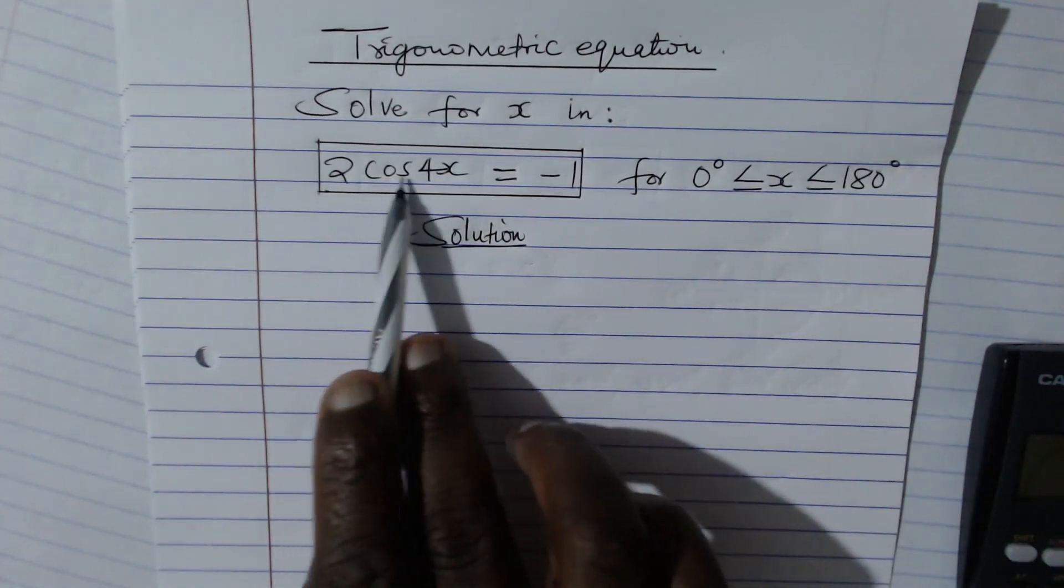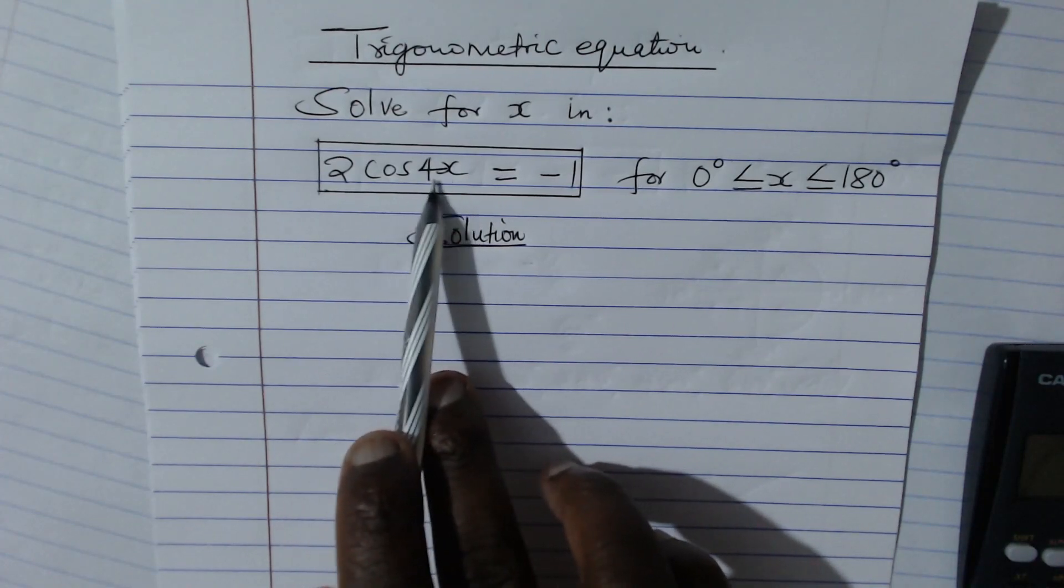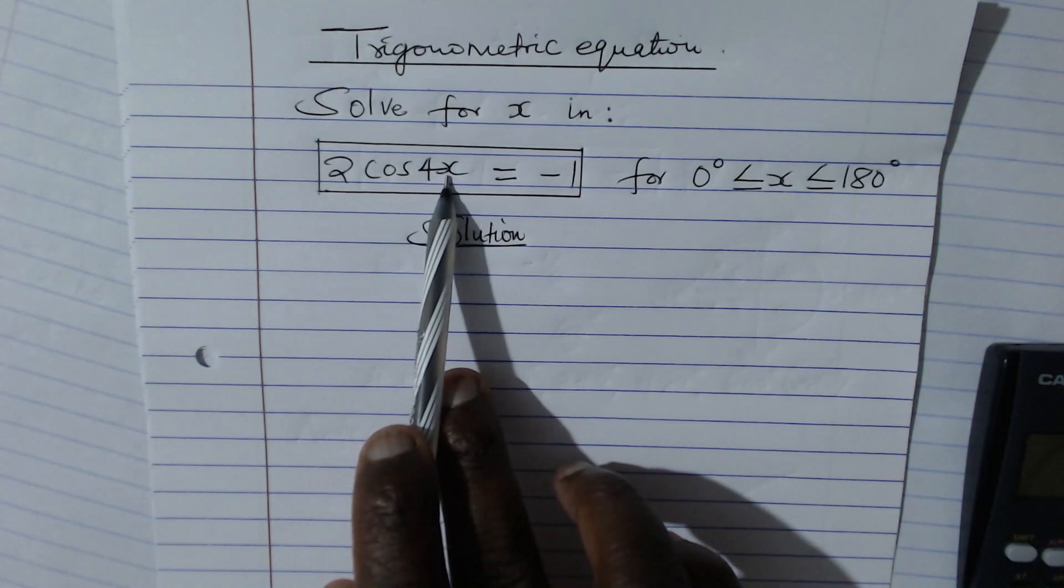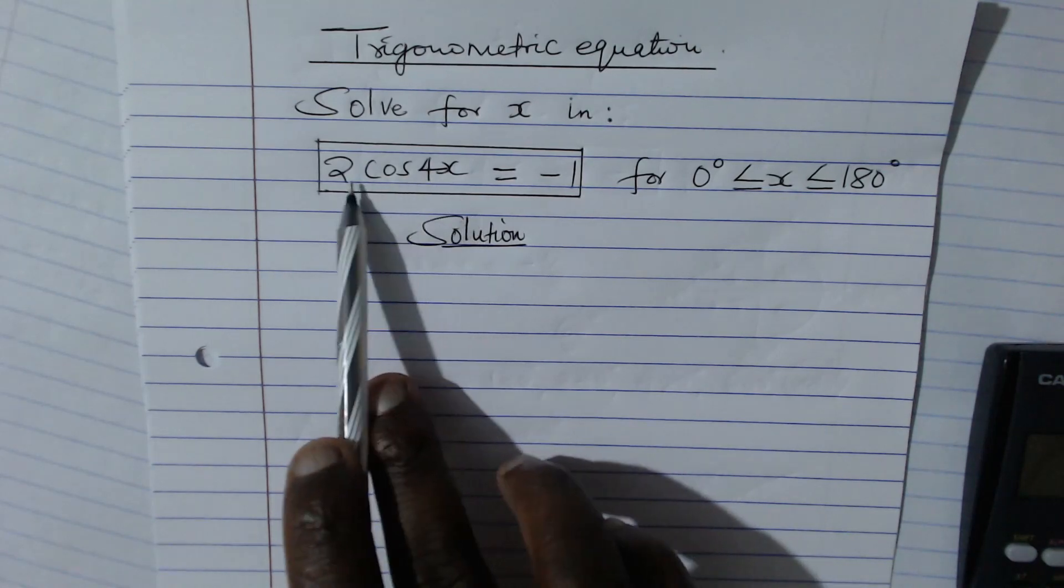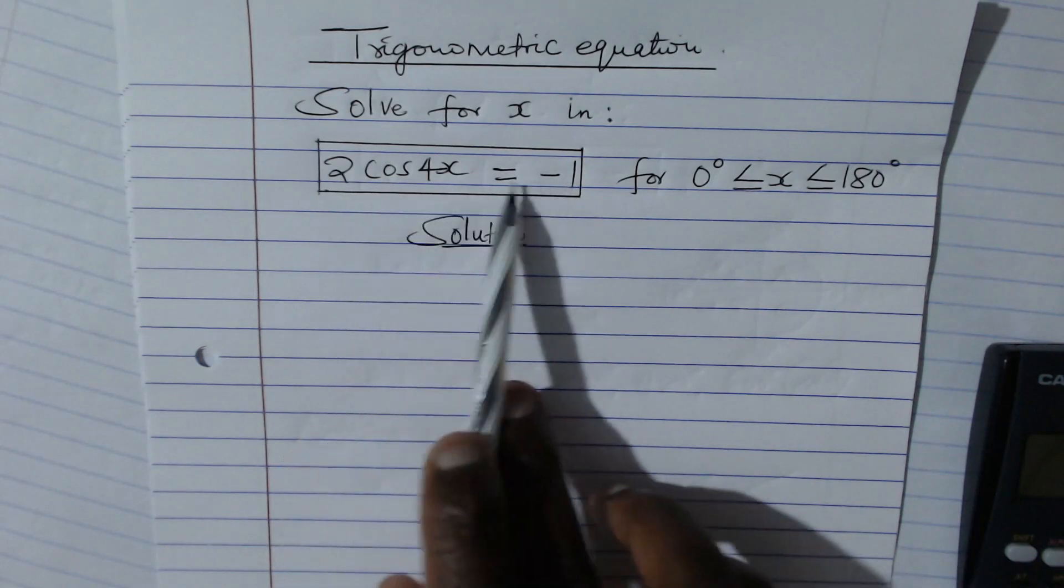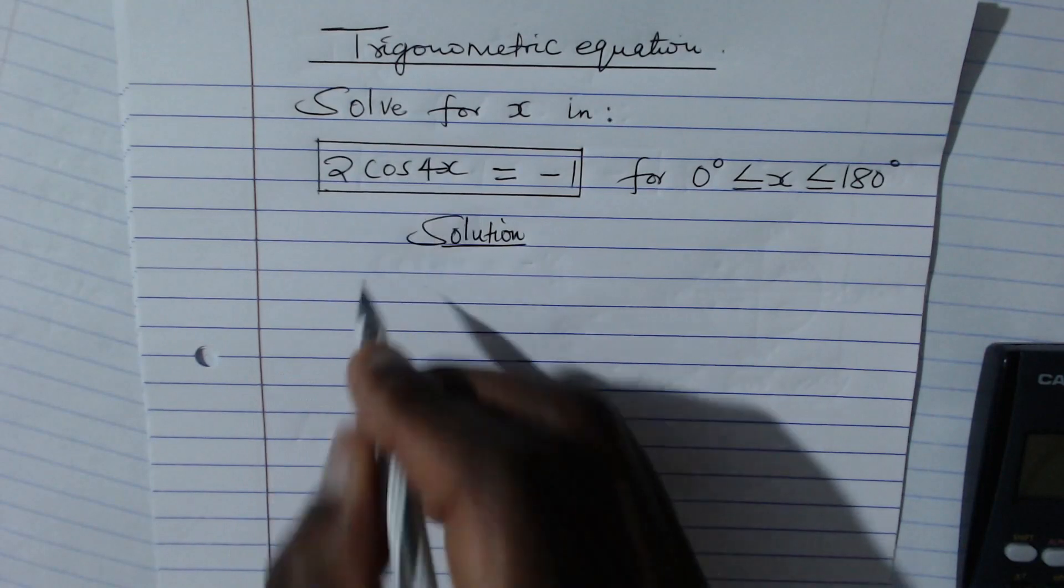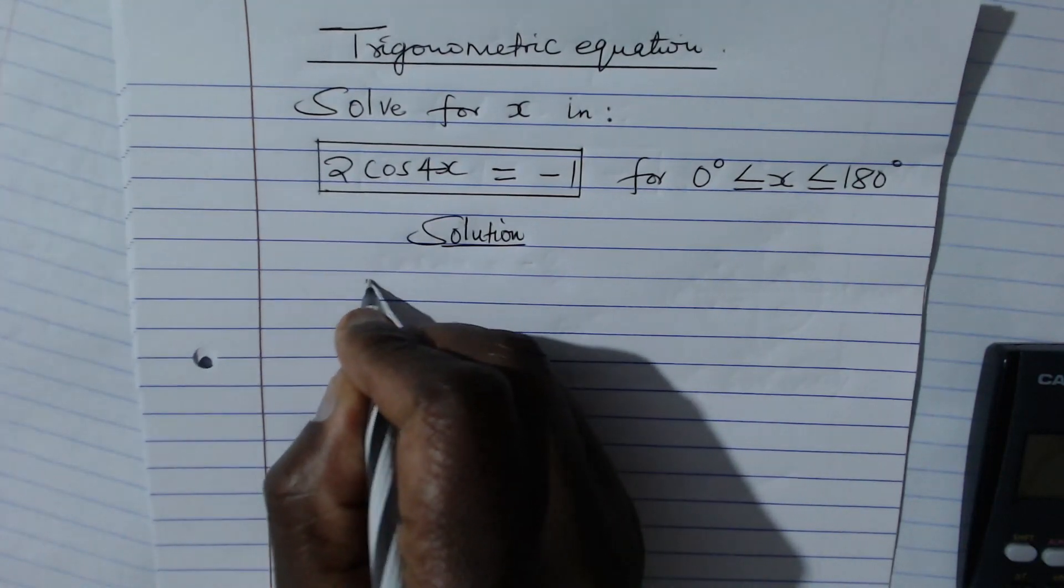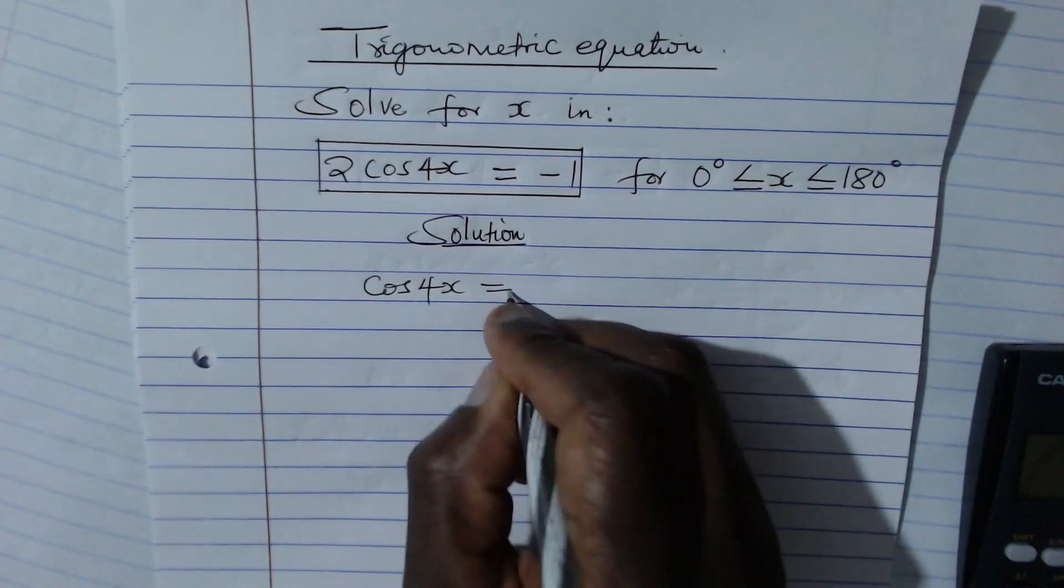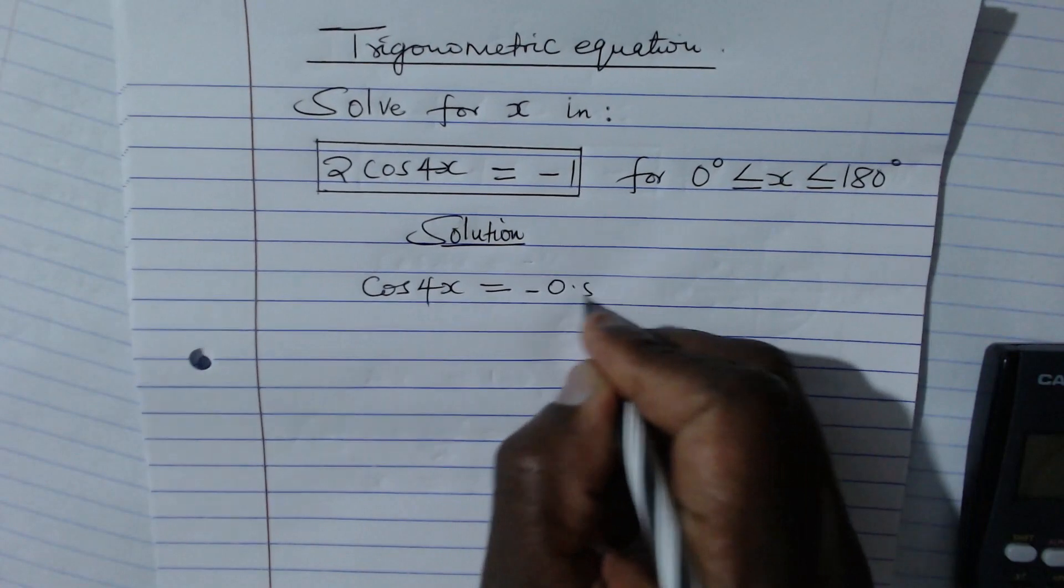Now to solve this trigonometric equation, we are solving for x, so we must eliminate everything from the left hand side and remain with x. We shall begin by eliminating 2, so we divide both sides of this equation by 2. When we divide the left hand side by 2, we shall remain with cos(4x) = -1/2, which equals -0.5.